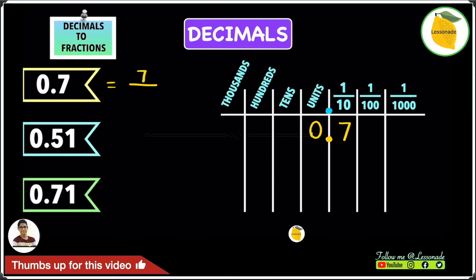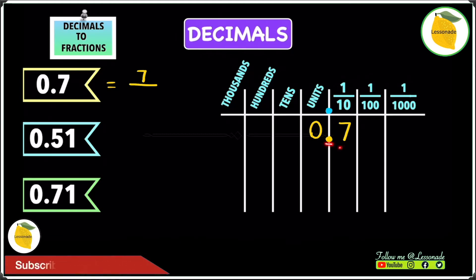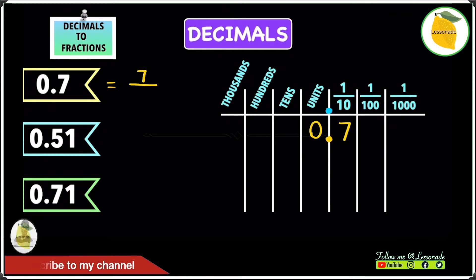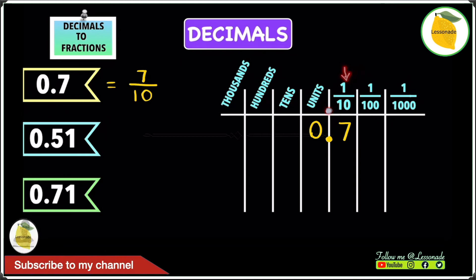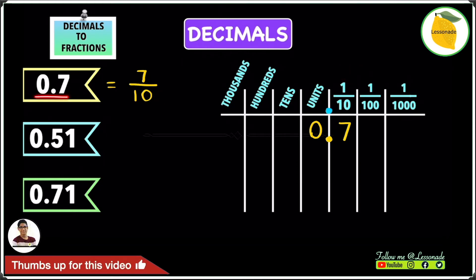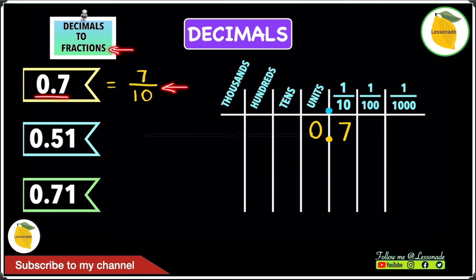To find the denominator, we look at the number of digits after the decimal point. In this case, we only have one digit after the decimal point, so 10 will be our denominator, since one place after the decimal point is tenths. Therefore, the answer to 0.7 converted into a fraction is 7 over 10.